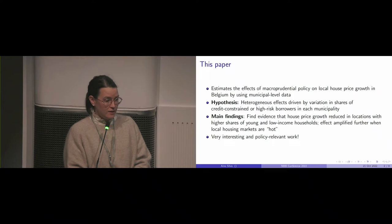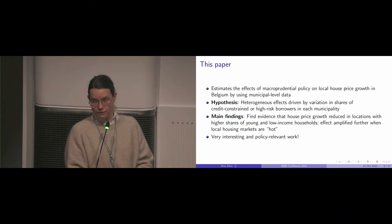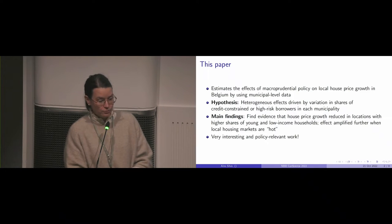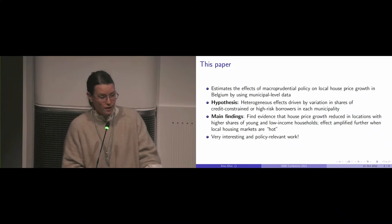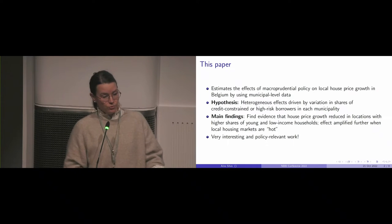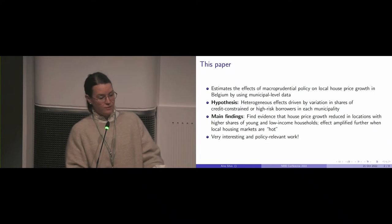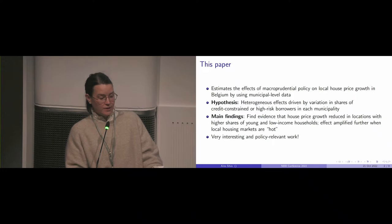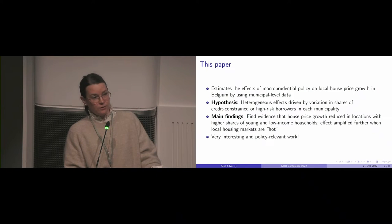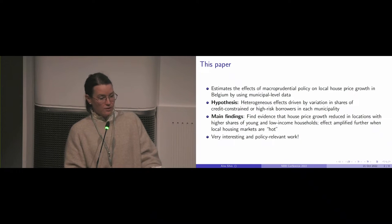The authors find evidence that house price growth is reduced in locations with higher shares of young and low-income households, which are proxies for credit-constrained households, compared to locations with lower shares of this type of households. The effect is amplified even further when the local housing markets are hot — in other words, when house price growth has been higher in those areas in the past.